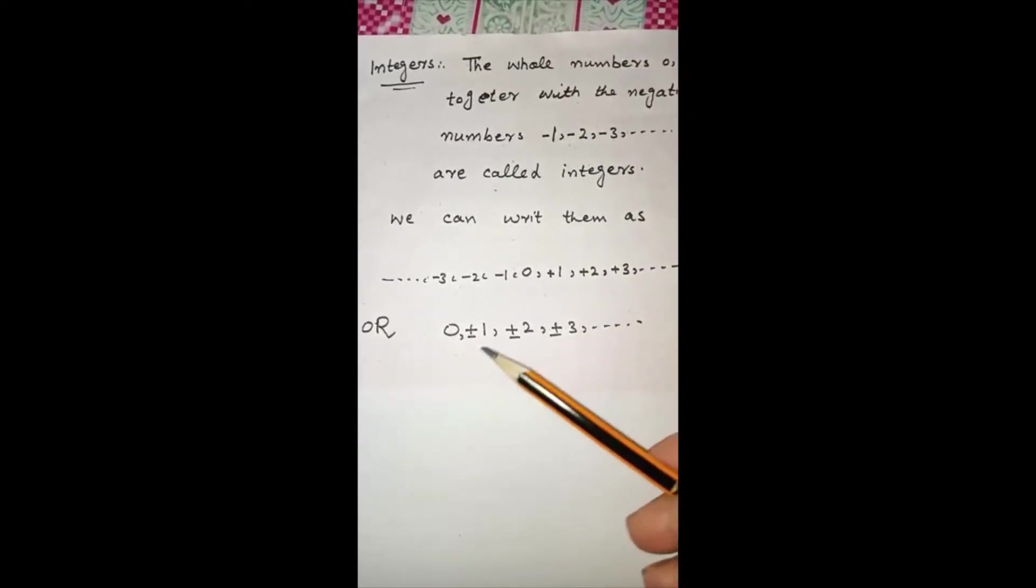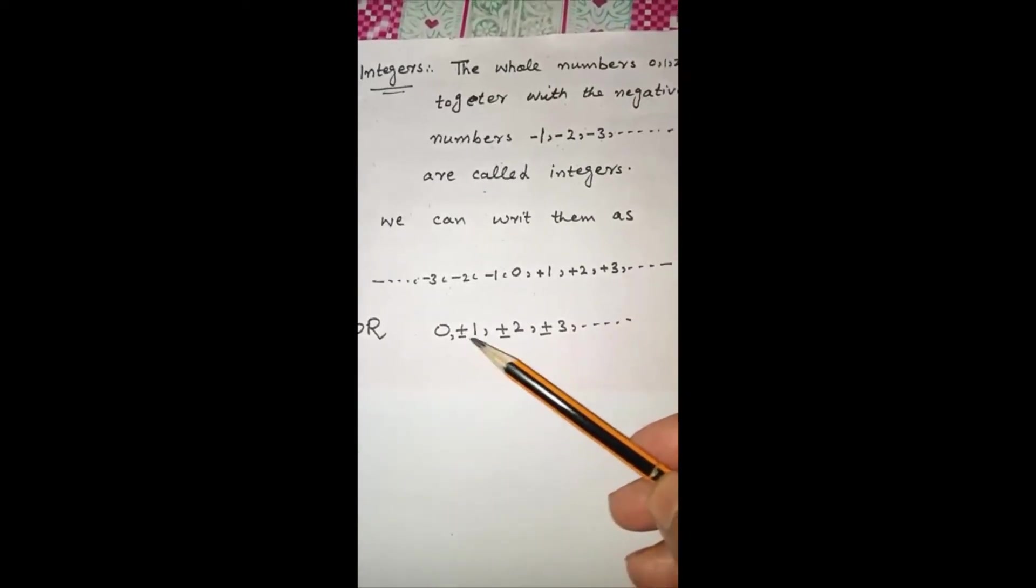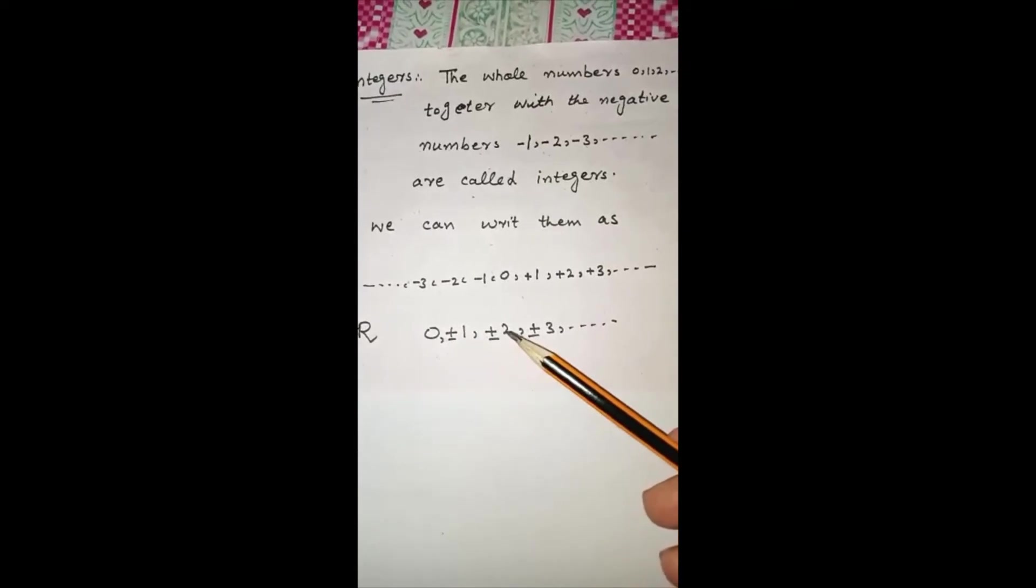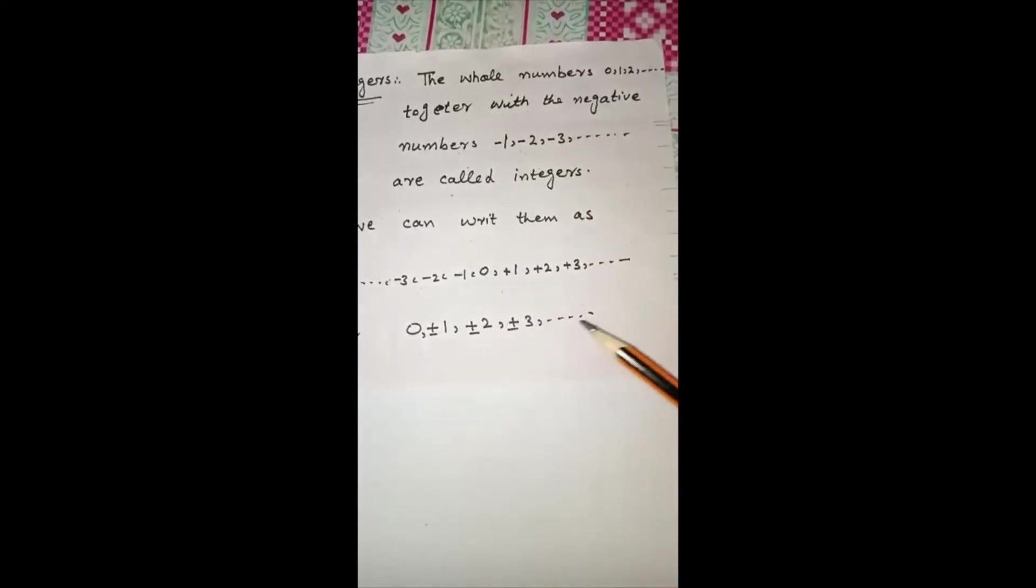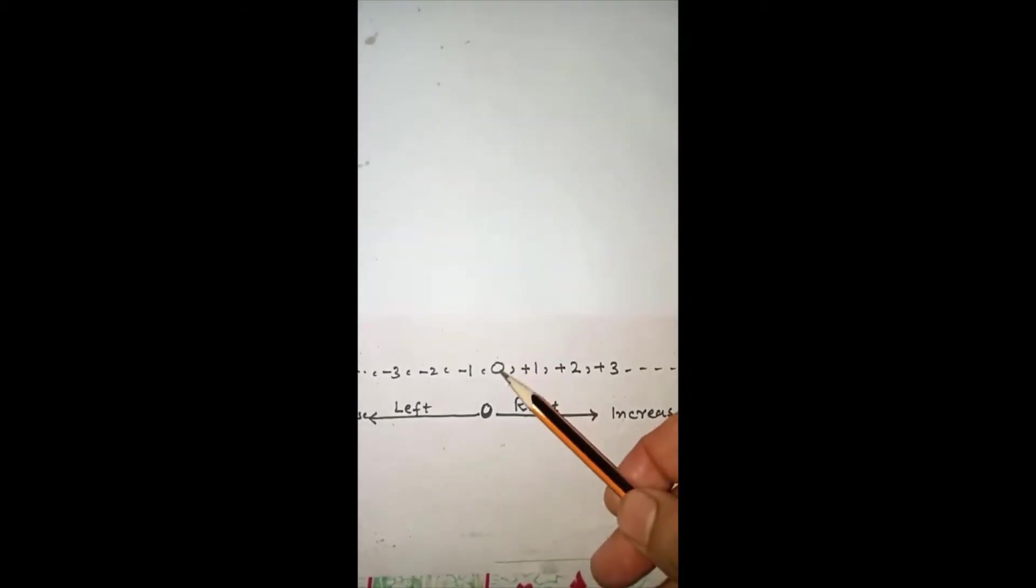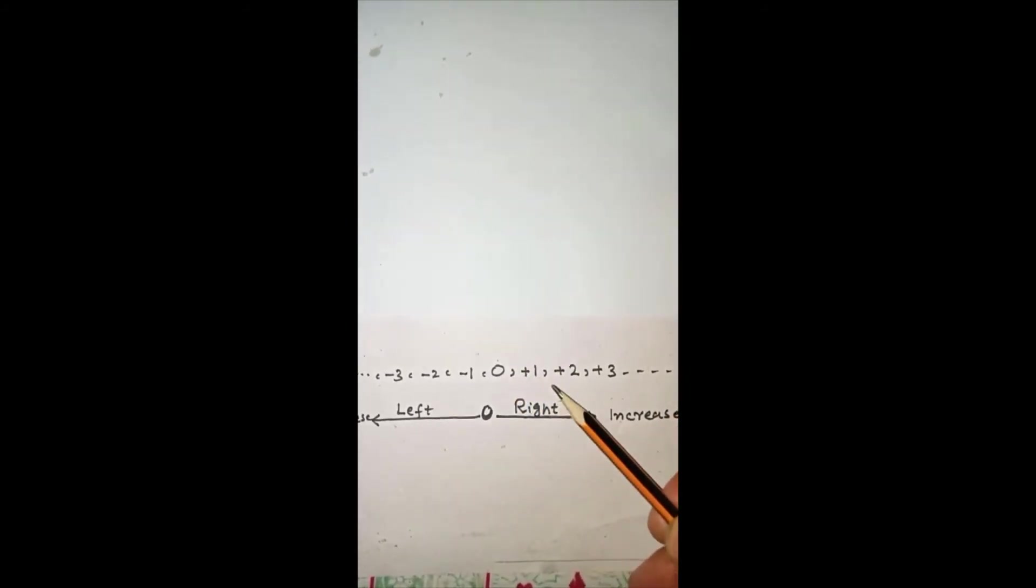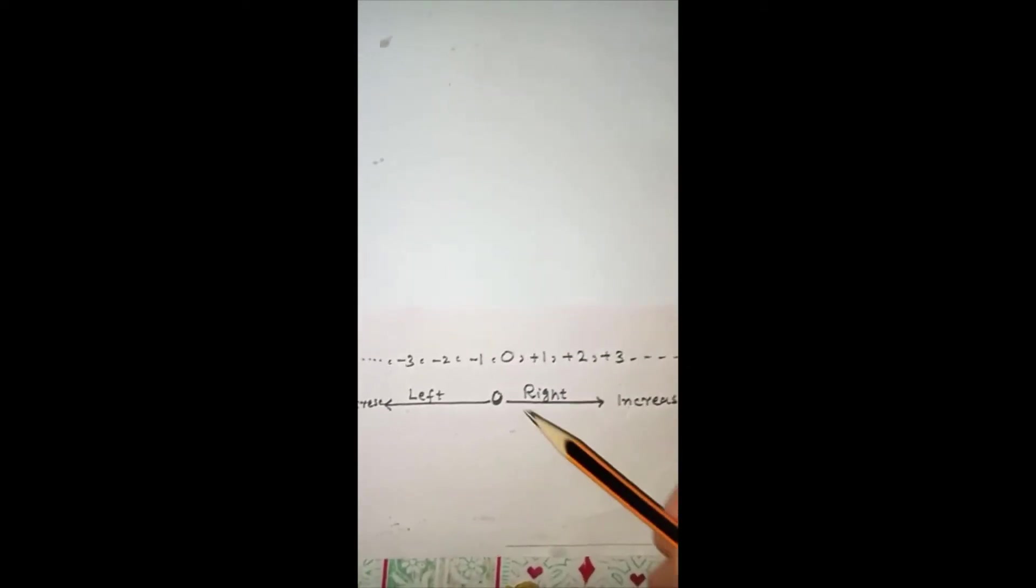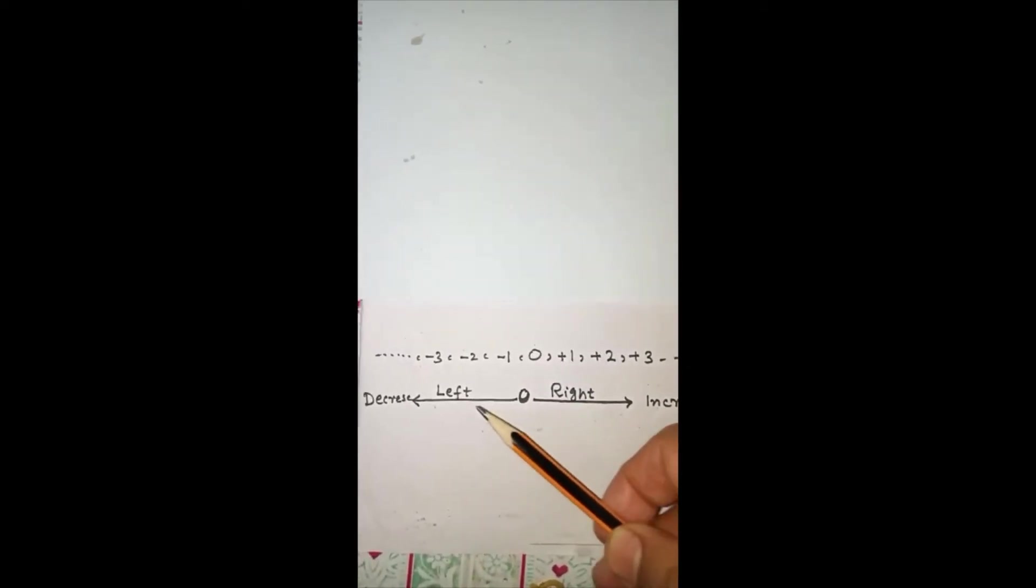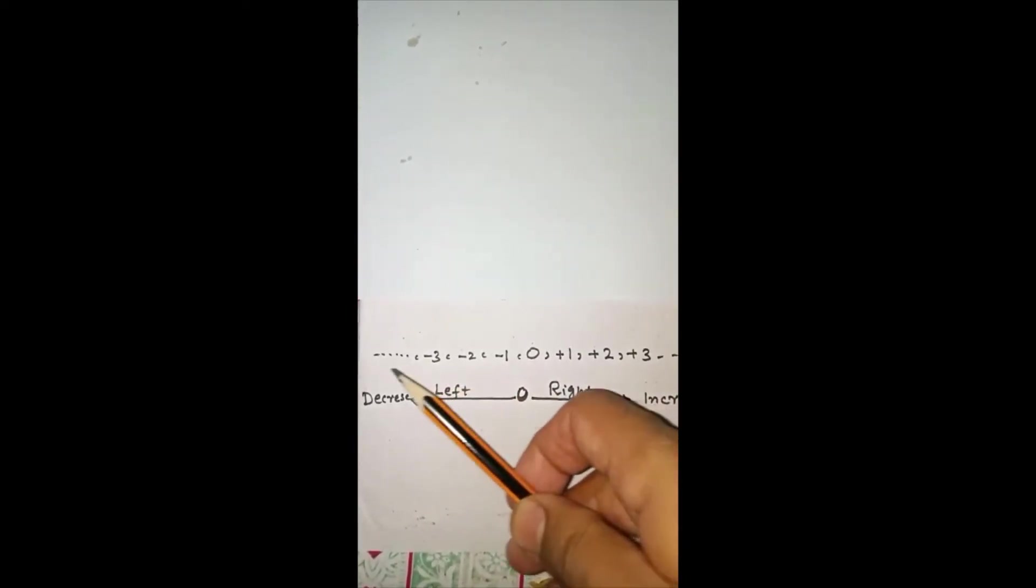The entire number line shows that on the right side of zero, numbers gradually increase. And on the left side of zero, numbers gradually decrease.